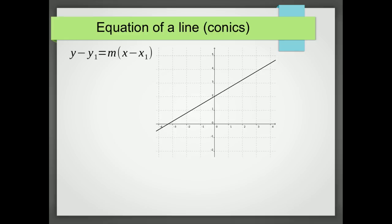You can see if we rearrange this equation, we could actually get m equals y minus y1 over x minus x1, which is basically saying the gradient equals the change in y over the change in x.